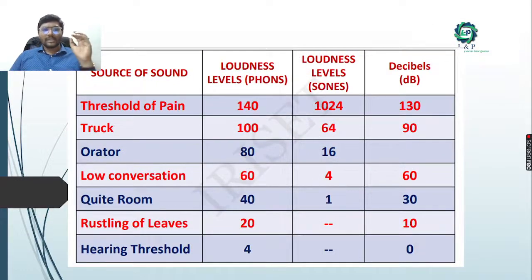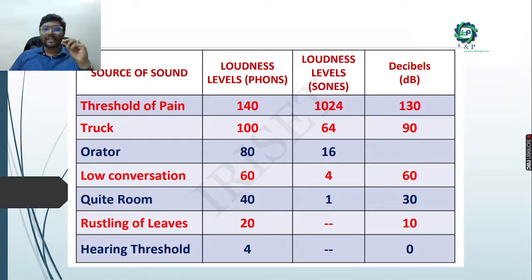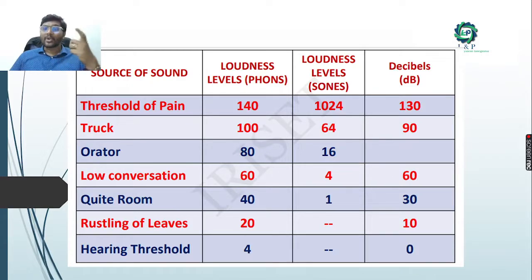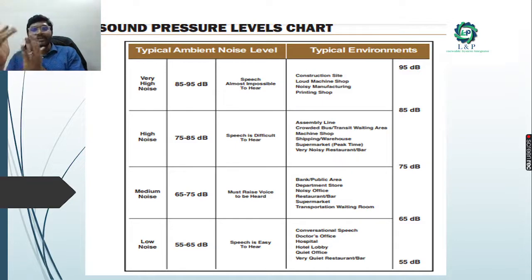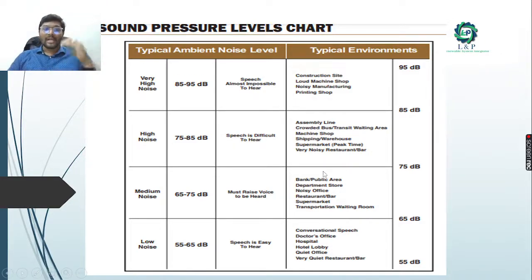Some examples of sound levels: rustling leaves at 10 dB, low conversation at 16 dB, quiet room at 30 dB, a truck at 90 dB, and threshold of pain at around 130 dB. These sound levels can be experienced in different environments, and details of high-level decibel sounds in various settings are provided.